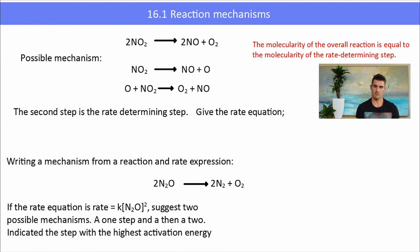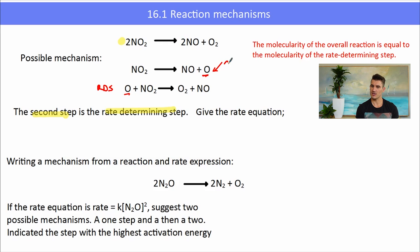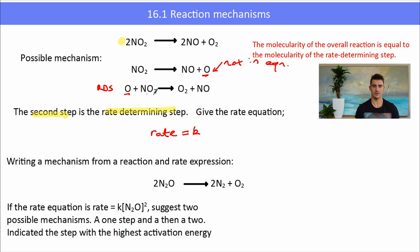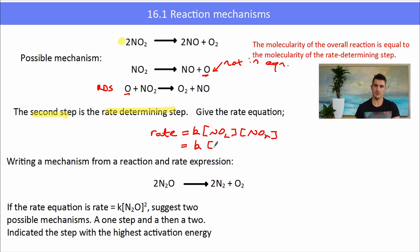If a reaction has a two-step mechanism and the rate determining step is the second step, things are a little more complicated. The formation of an intermediate won't show up in the overall reaction, but it has an impact on our rate equation. We need to think about what that intermediate was formed from. The rate will equal K times NO, because NO is in the rate determining step, but the O atom came from the decomposition of NO2, so we trace it back and the rate becomes K times NO2 squared.